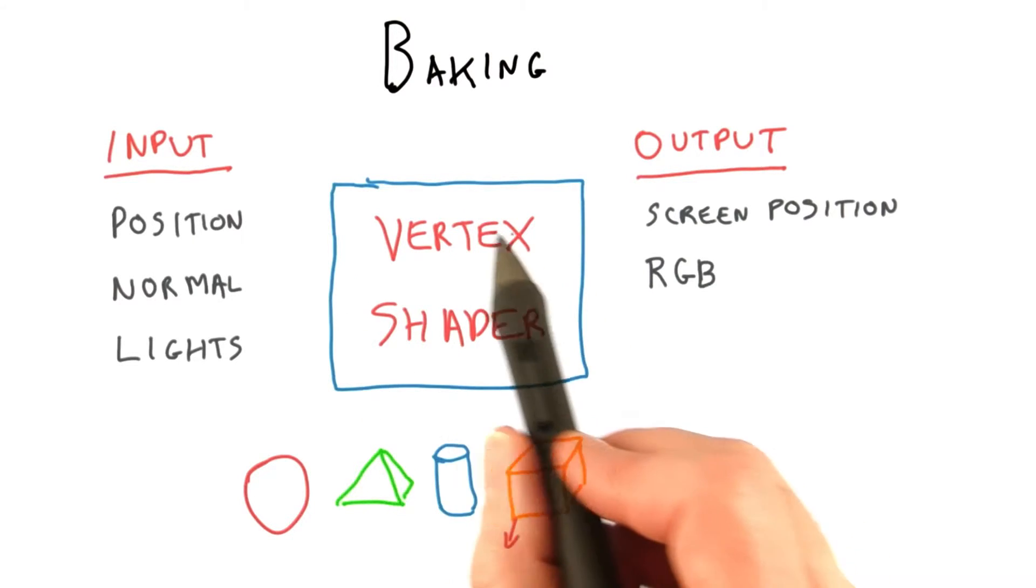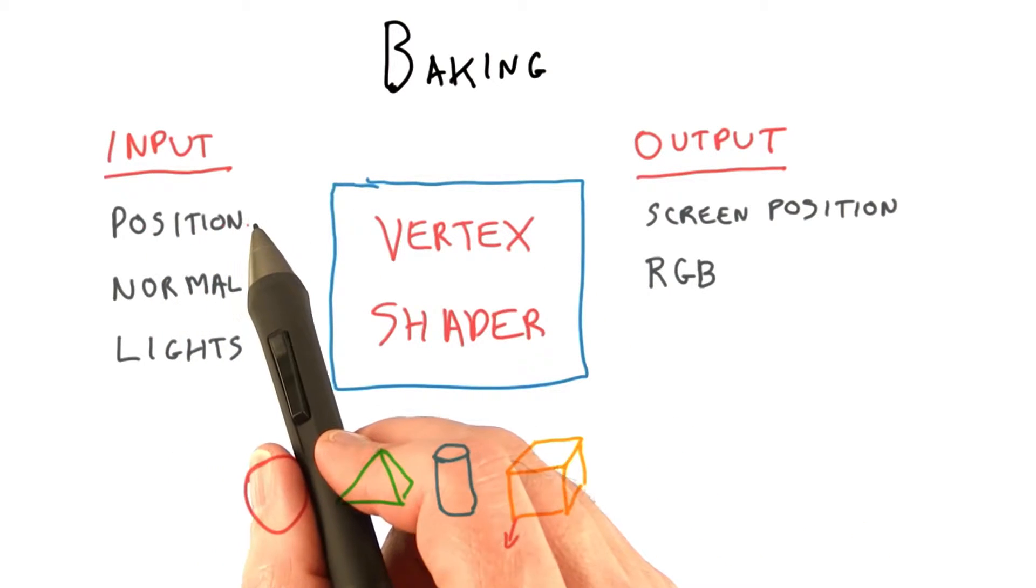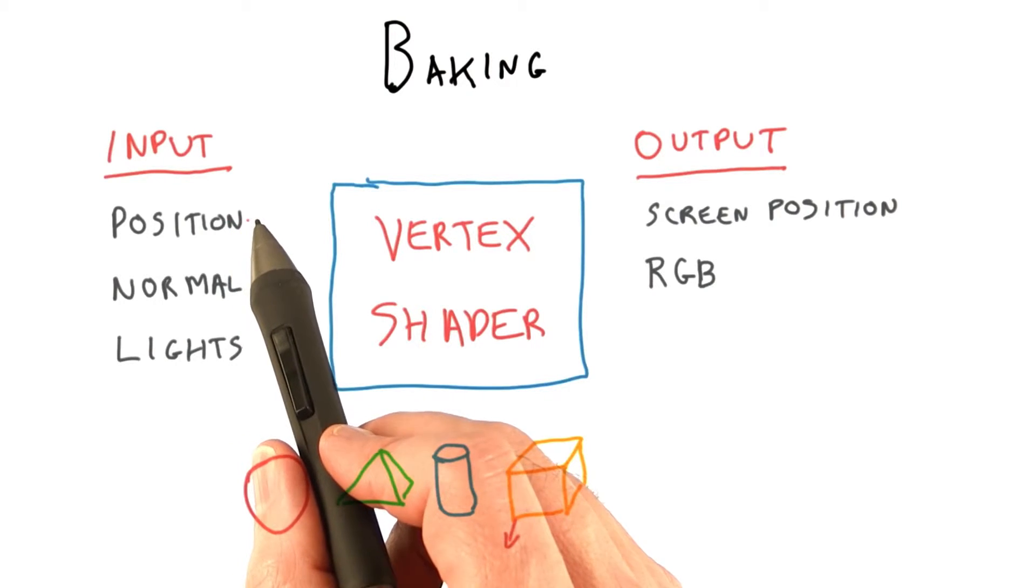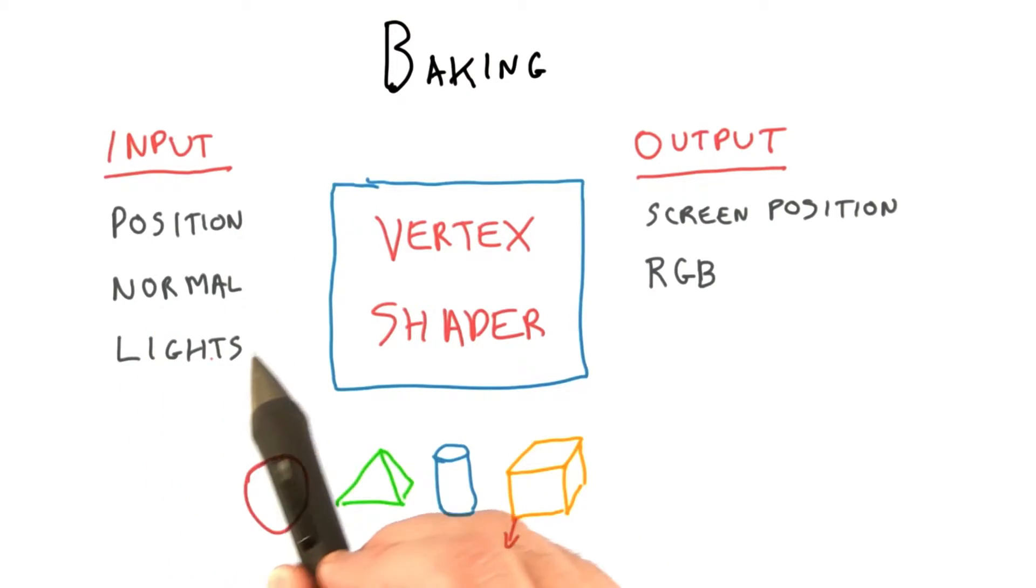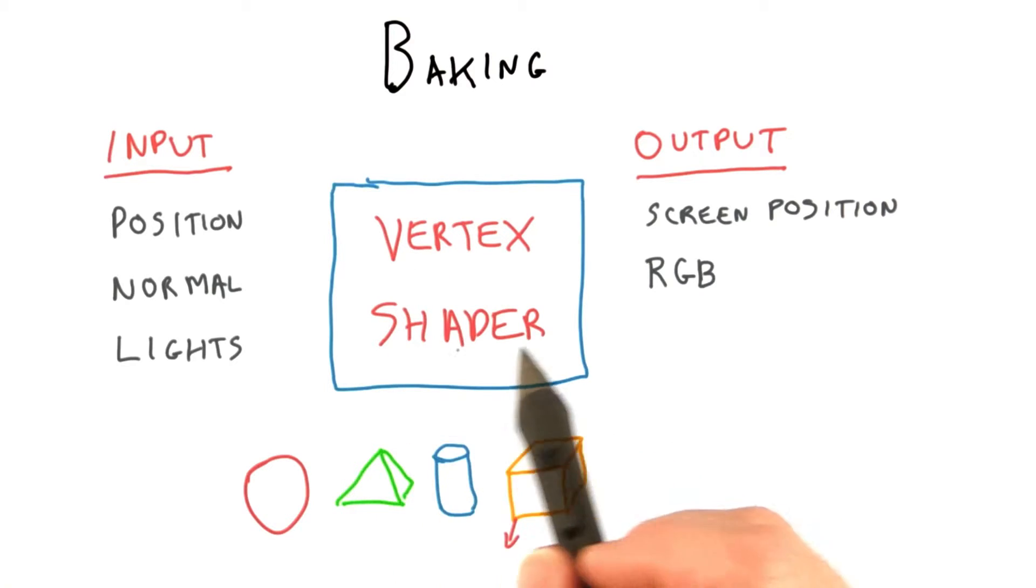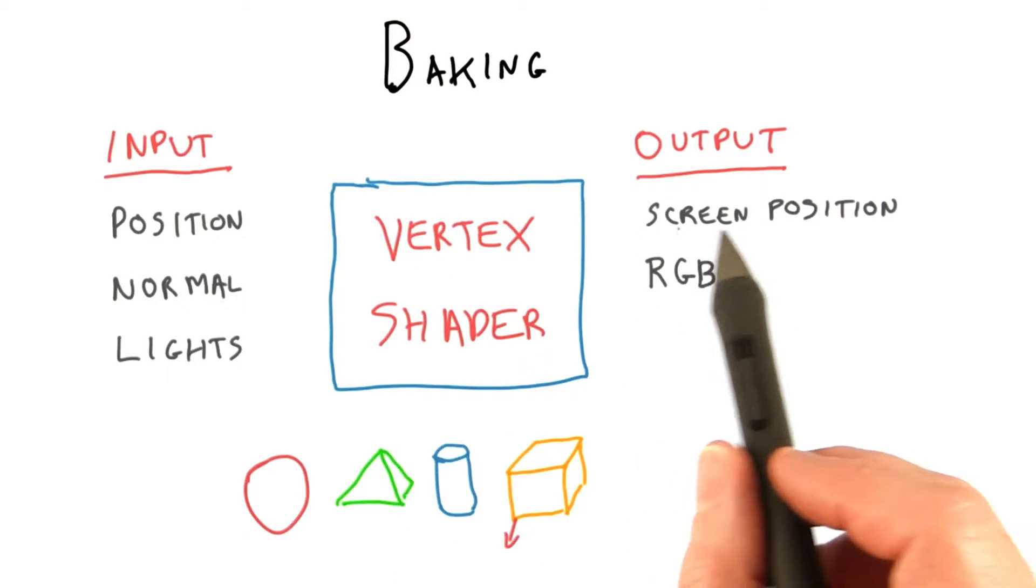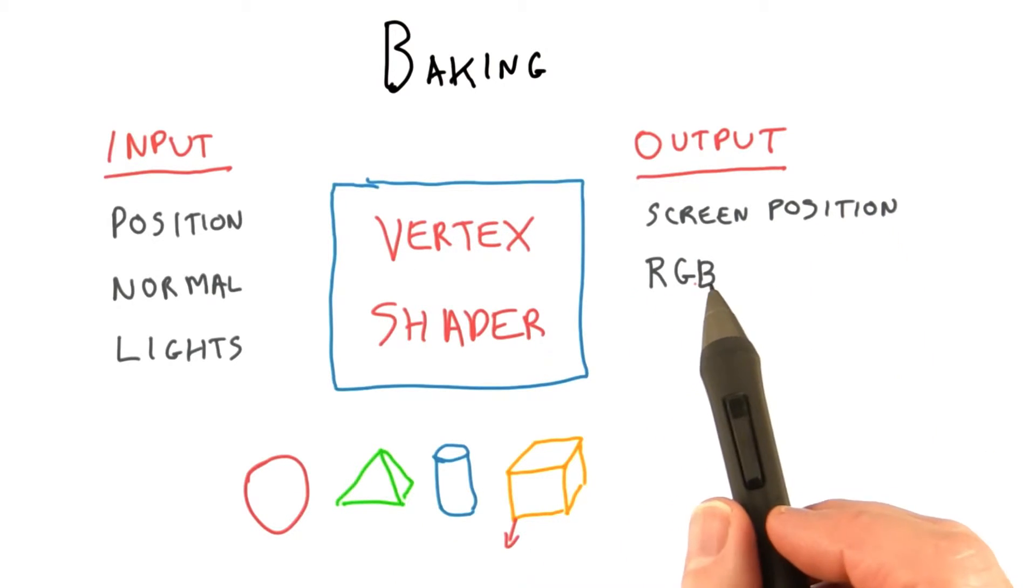The vertex shader normally takes as input the position of the object, in other words the vertex's location, and it also takes in the normal and lights that want to be applied to the surface. The output is the screen position and an RGB color.